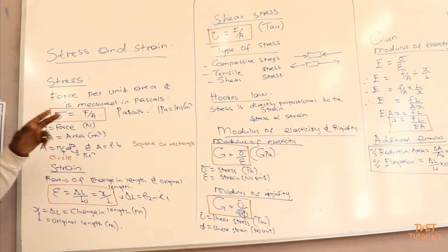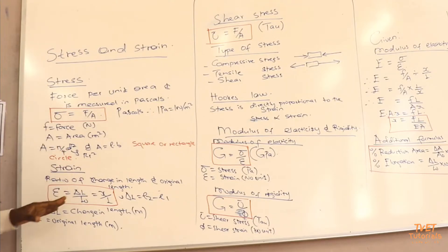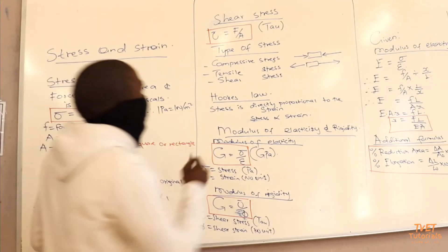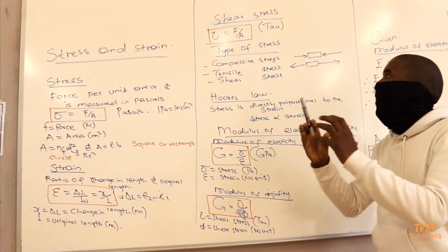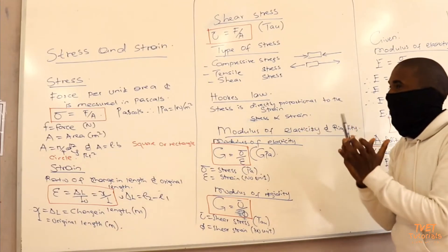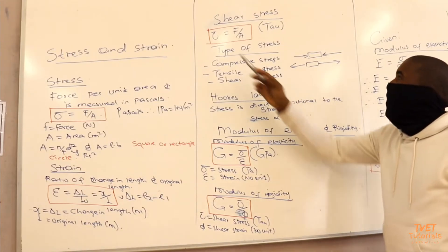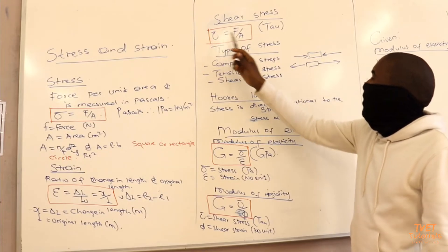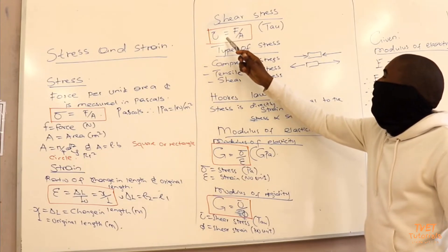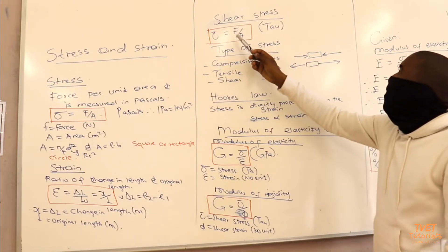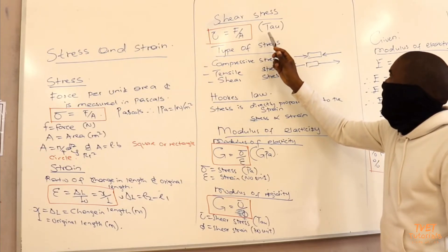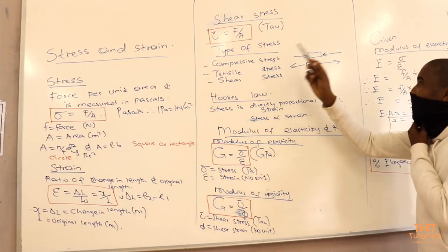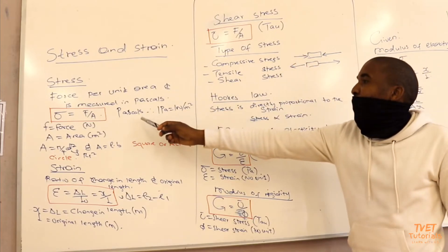Now we have stress and strain. The next is shear stress. Shear stress is when the object can break — shear means to break. The symbol for shear stress is tau, and its formula is similar to normal stress: F over area. The only difference is that shear stress is measured in tau, unlike normal stress.